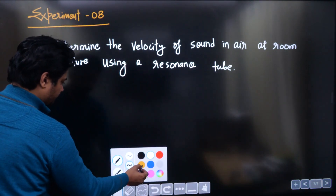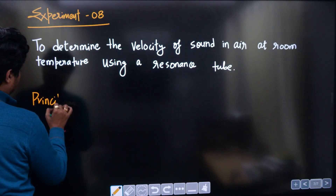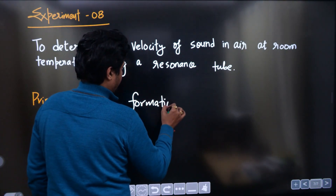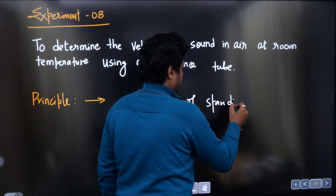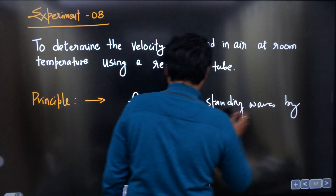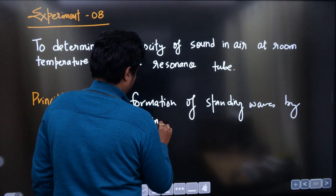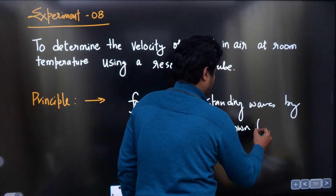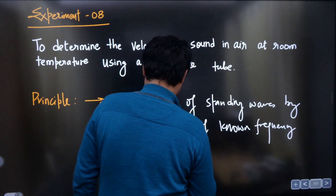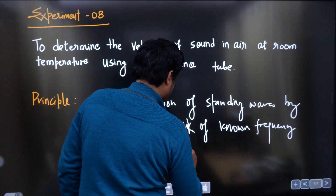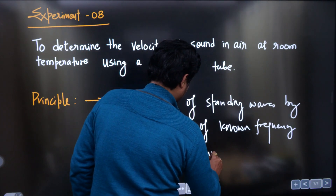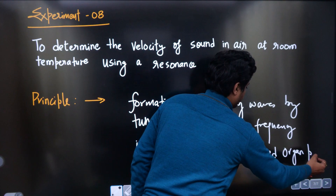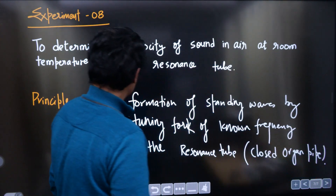The principle here is the formation of standing waves by a tuning fork of known frequency in the resonance tube, which you can also call a closed organ pipe.